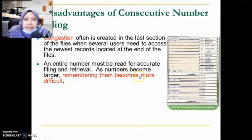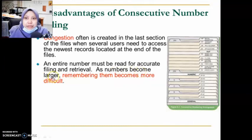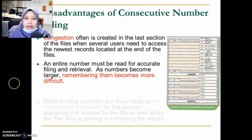Another disadvantage is that large numbers require more accurate filing and are harder to remember. With 3-digit numbers like 290, it is easy to read and remember. However, remembering becomes more difficult when the numbers become larger — for example, 6-digit numbers are quite hard to recall.